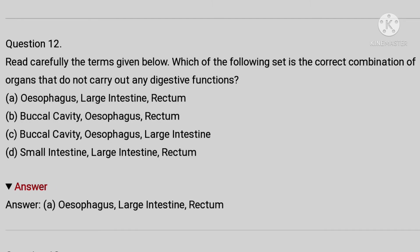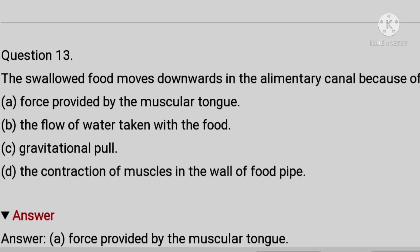Twelfth question is: Read carefully the terms given below. Which of the following set is the correct combination of organs that do not carry out any digestive function? A: esophagus, large intestine, rectum. B: buccal cavity, esophagus, rectum. C: buccal cavity, esophagus, large intestine. D: small intestine, large intestine, rectum. And the answer is esophagus, large intestine, rectum.